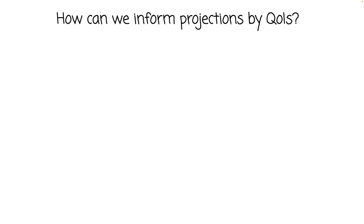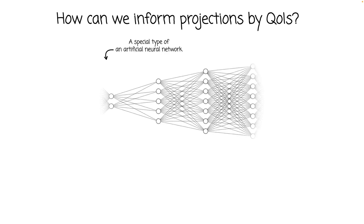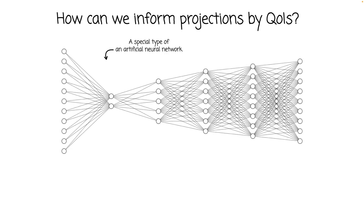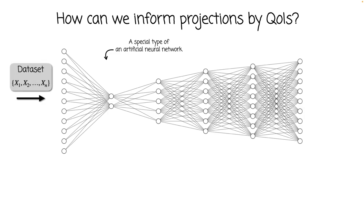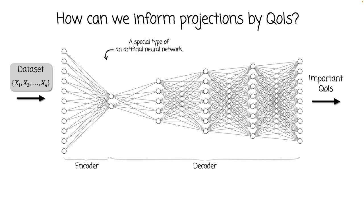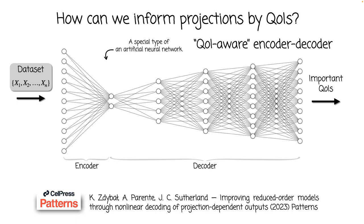Such a subspace preserves gradient information in a QoI after projection. So how can we inform projections by quantities of interest? Instead of using PCA, we can focus on an encoder-decoder, which is a special type of artificial neural network. At the input layer, we pass our original dataset, and at the output layer, we reconstruct important QoIs that we would like to be represented as best as possible over the low-dimensional subspace. This part of the network is called an encoder, and this part is called a decoder — hence we call this approach a QoI-aware encoder-decoder.